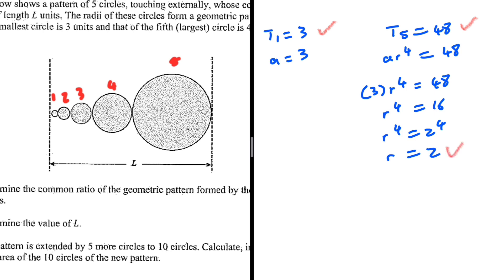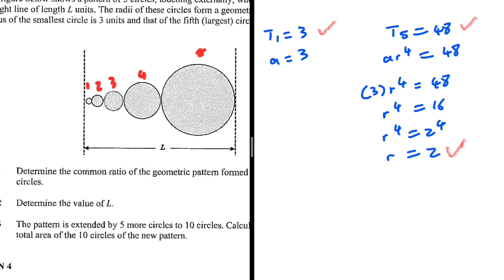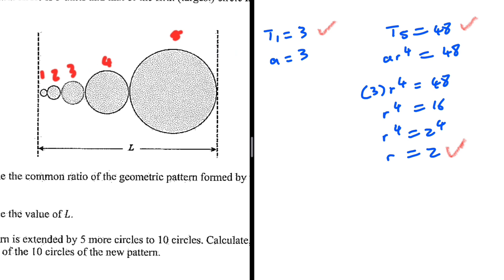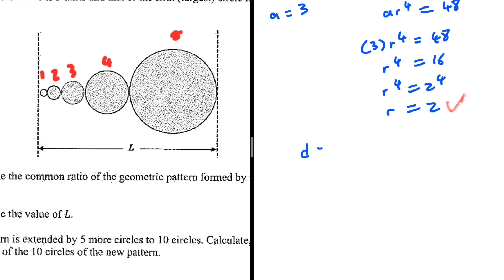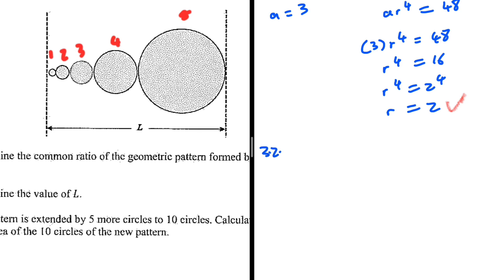That is our common ratio for 3.2.1. For 3.2.2, we want to determine the value of l. The value l is made up of the diameters of the circles, so l equals the diameter of the first circle plus the diameter of the second plus the third, and so on. Since diameter equals 2r, we can calculate the sum of the radii of the five circles and multiply by 2. With a equals 3 and r equals 2, we calculate S5.